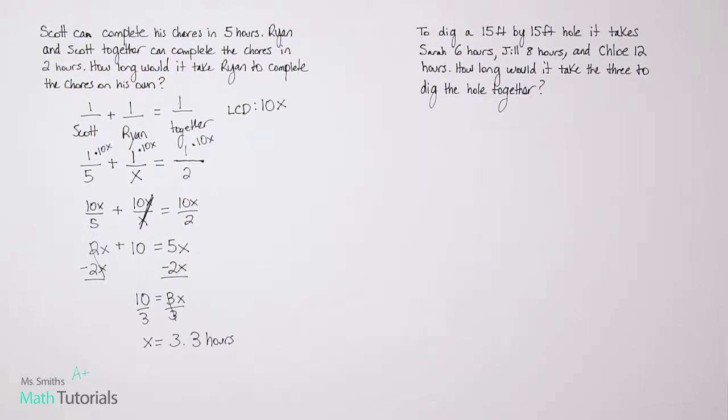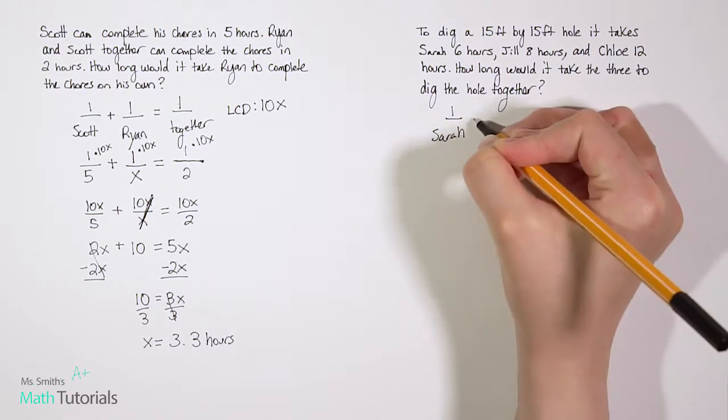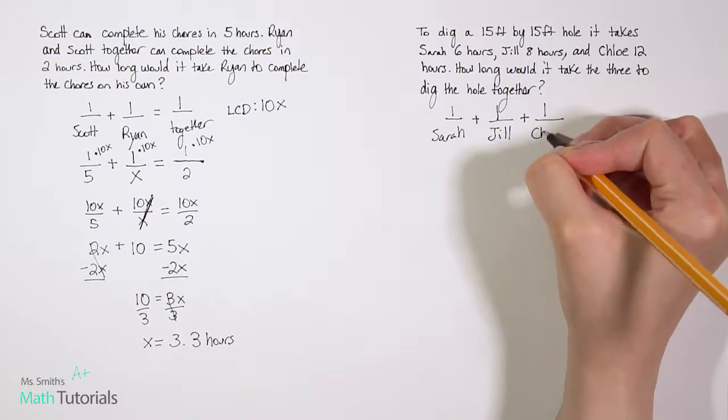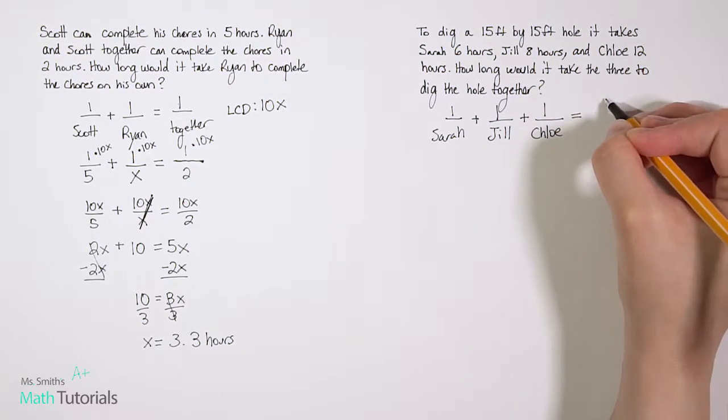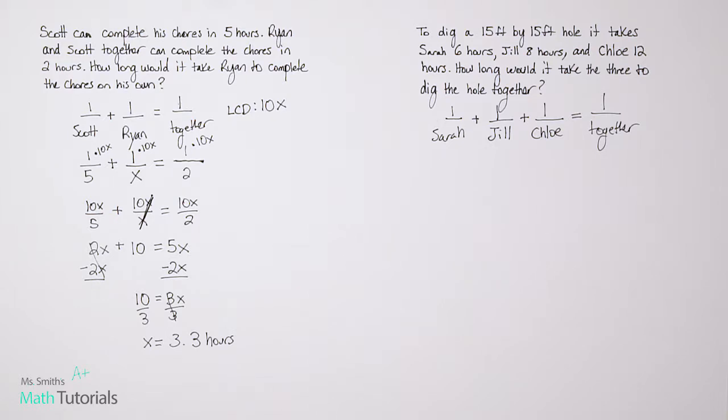Let's do one more together. To dig a 15 foot by 15 foot hole, it takes Sarah 6 hours, Jill 8 hours, and Chloe 12 hours. How long would it take the three to dig the hole together? So we know how long it would take them individually, but what if they all work together? How long would it take them? Notice we have three people this time. On the last two, we just had two people. It works the same way. Our setup would be very similar. We're going to say one over our first person, Sarah, plus one over our second person, Jill, plus one over our third person, Chloe. And that gives us the total amount if they would work together.